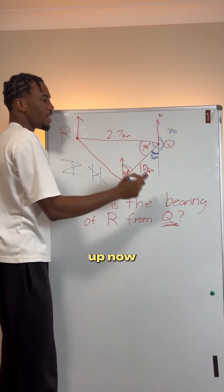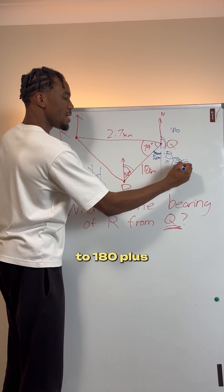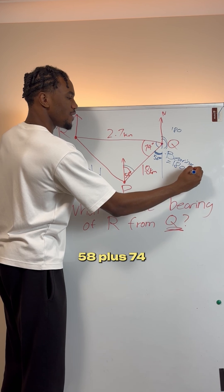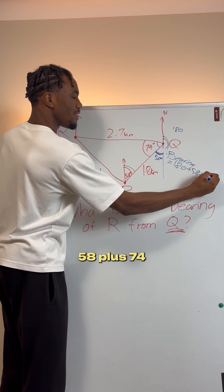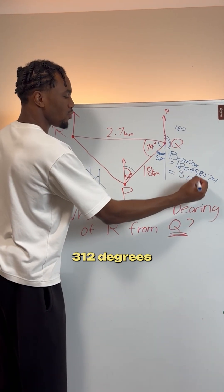And so all we have to do is add all of these up now. You can even say bearing equals to 180 plus 58 plus 74. That equals to 312 degrees.